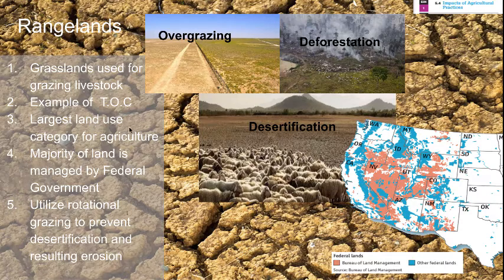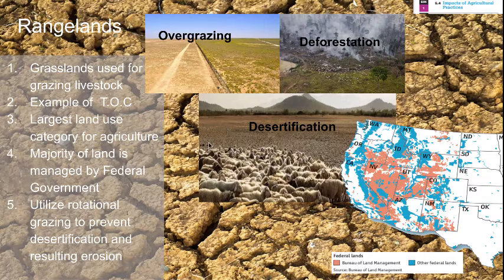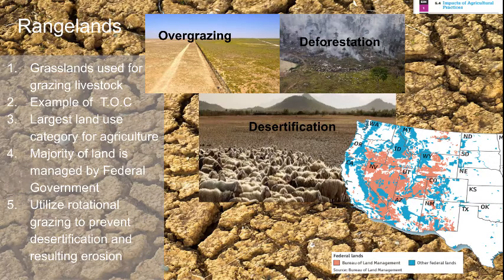Another use of land is rangelands. Looking at the map, the Bureau of Land Management, or BLM, covers a large area of federal lands, which are for the most part rangelands. Rangelands are defined as grasslands typically used for grazing livestock. This is a good example of the tragedy of the commons — shared space that could be overused if not managed by an organization like the BLM. Rangelands are actually the largest land use category for agriculture, more so than growing crops in terms of total land space.